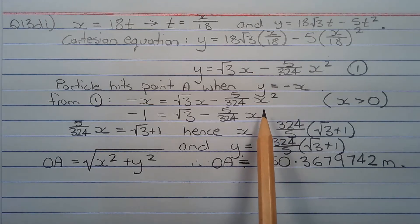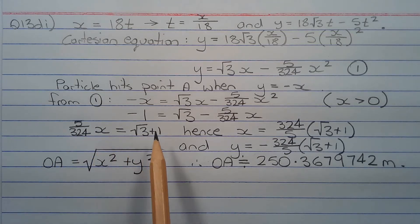Making x the subject of this equation, we have 5 over 324 times x equals root 3 plus 1. Hence x equals 324 over 5 times root 3 plus 1. And y equals negative 324 over 5 times root 3 plus 1 since y equals negative x.